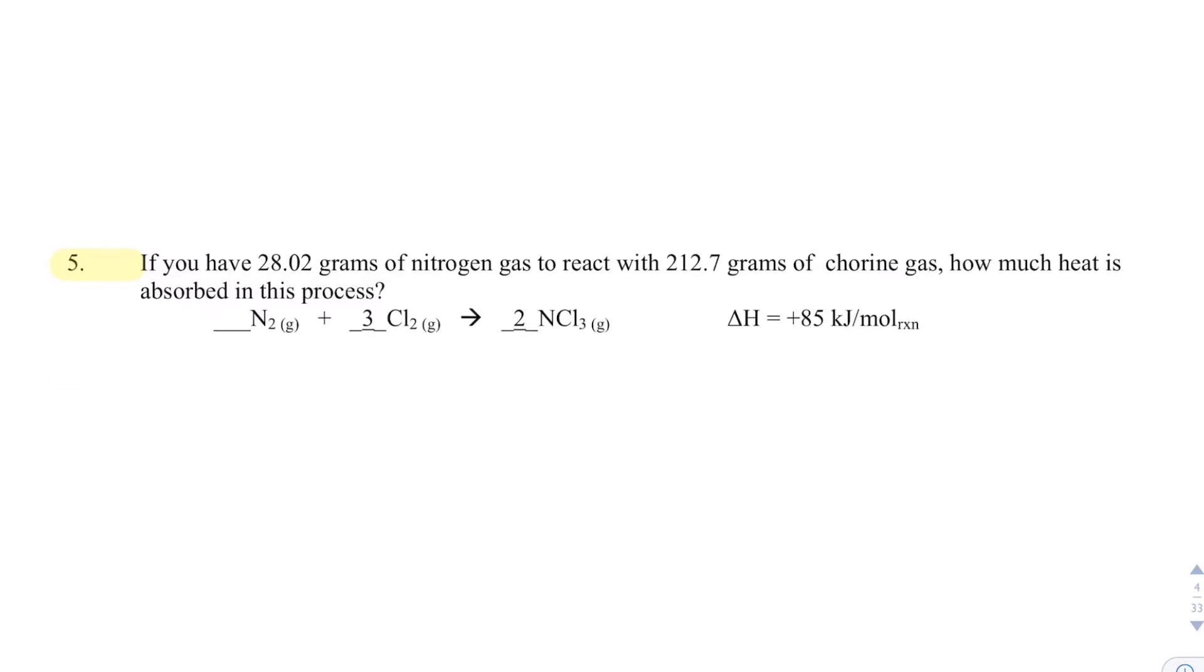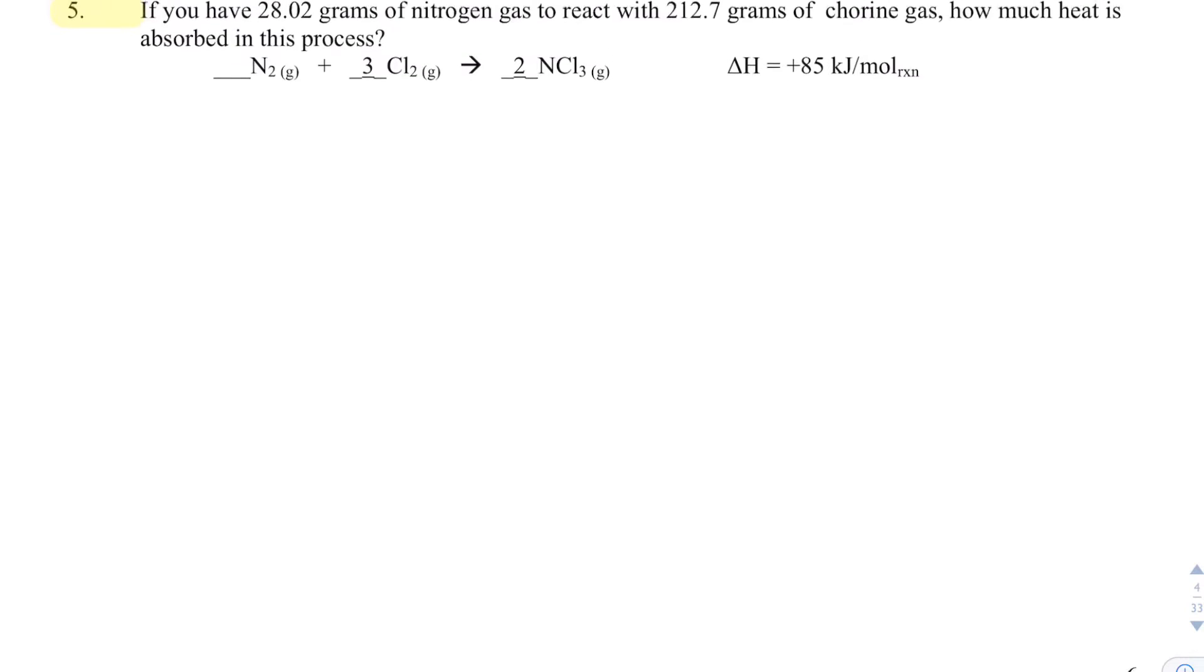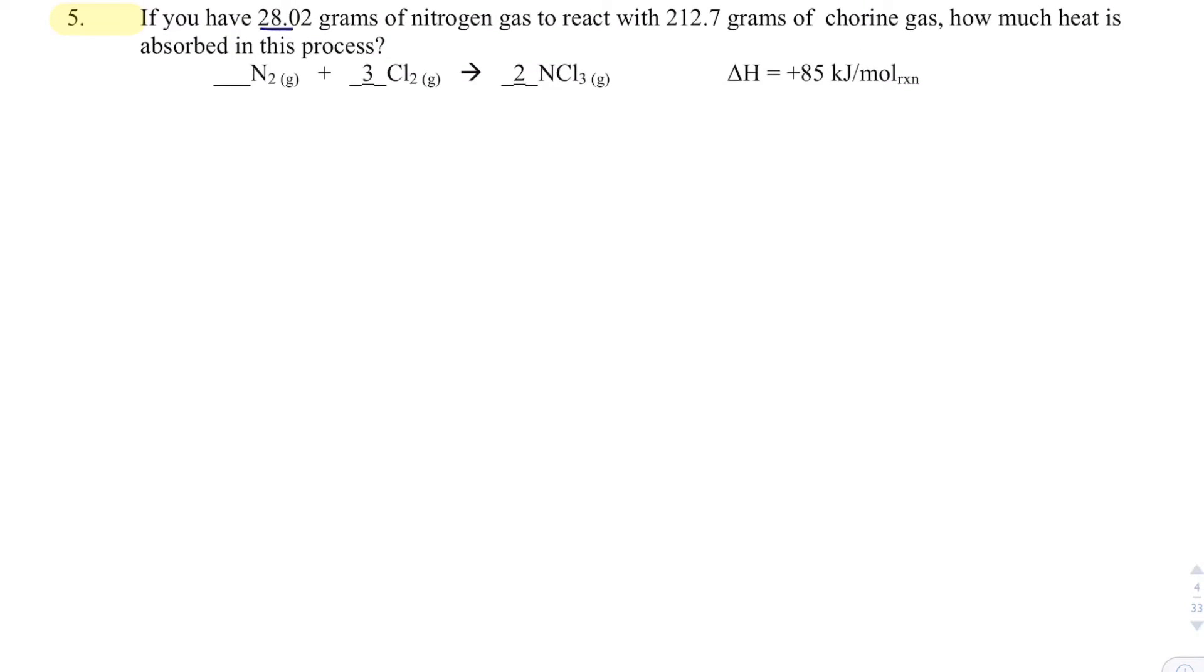Moving on to a limiting reactant problem, here we've got 28.02 grams of nitrogen and it's going to react with 212.7 grams of chlorine. I want to know how much heat is absorbed. The heat is positive, so we'll say plus 85 kilojoules per mole of reaction. I know this is a limiting reactant problem because I'm given nitrogen and chlorine and I don't know which one to start my conversion with.